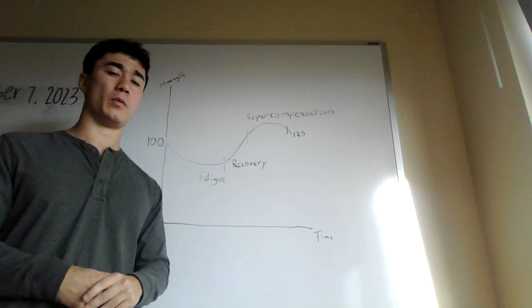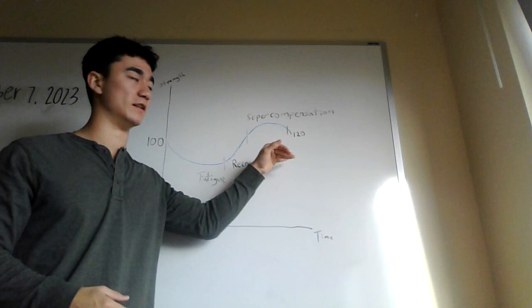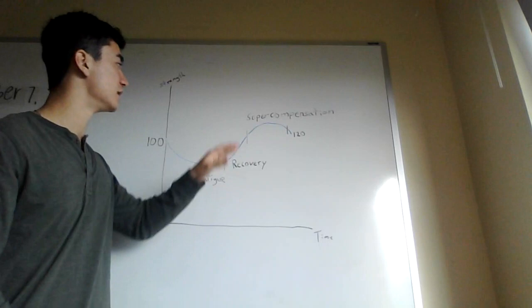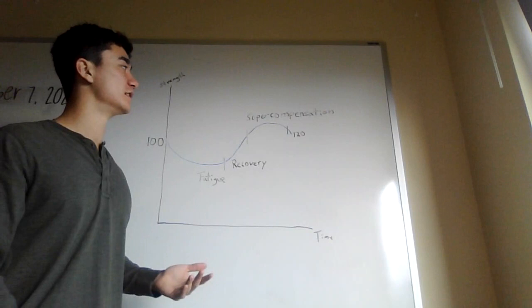Now the third phase we'll be going into is super compensation. This is the most important phase and probably the most complicated one, because this is the phase where your body will be compensating for the amount of training stimulus you gave it, the fatigue it's dealing with, and the increase in weight. So your body is compensating for all of those things by becoming stronger.